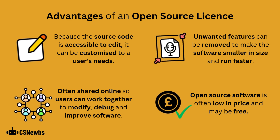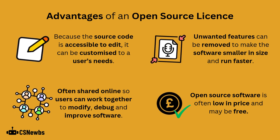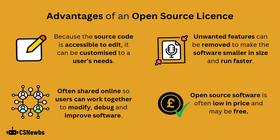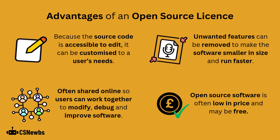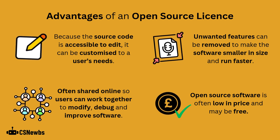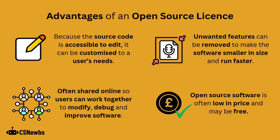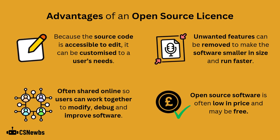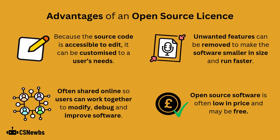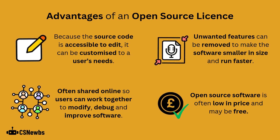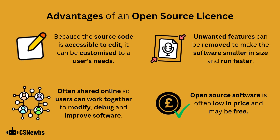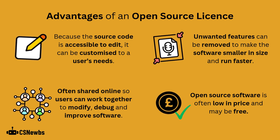The advantages of an open source license include that because the source code is accessible to edit, it can be customized to a user's needs. Also, unwanted features can be removed to make the software smaller in size and run faster. Open source software is often shared online, so users can work together to modify, debug, and improve it. Finally, open source software is often low in price and may even be free.